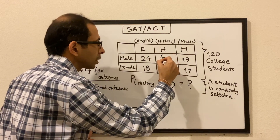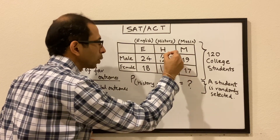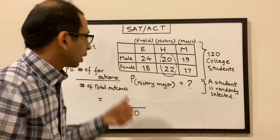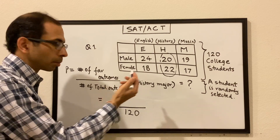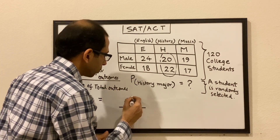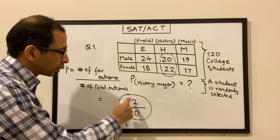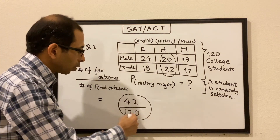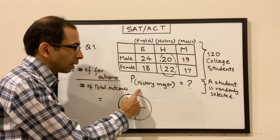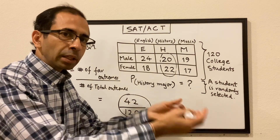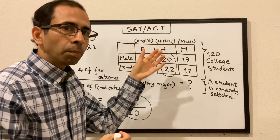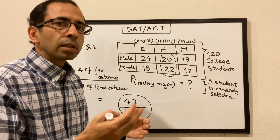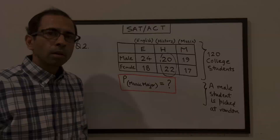Overall, 20 plus 22 which is 42, so 42 students are doing a major in history. Hence our number of favorable outcomes becomes 42. So 42 over 120 is our probability — when we pick any student randomly from this overall group, the probability that the student would be doing a major in history is 42 over 120.